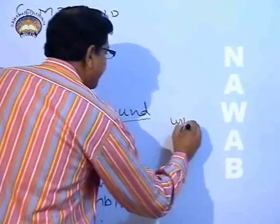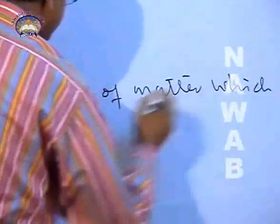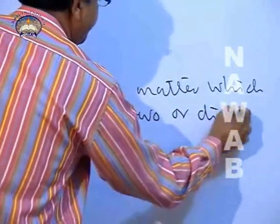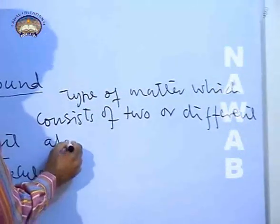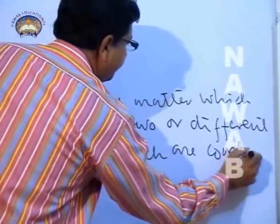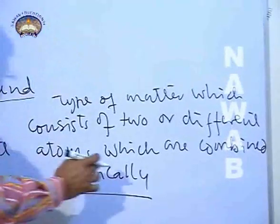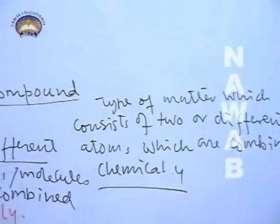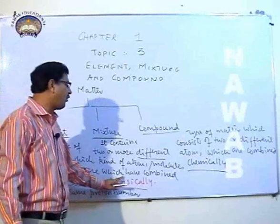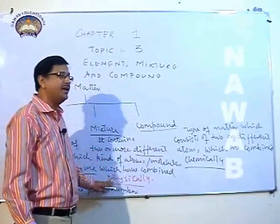Now come to compound. A compound is also a type of matter which consists of two or more different atoms which are combined chemically. The difference between mixture and compound is only the type of combination: here the atoms combine chemically, while in mixture they are combined physically.